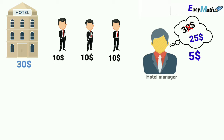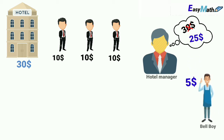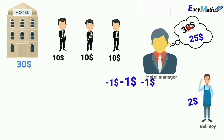So the front desk tells the bellboy to give $5 back to them. But while the bellboy is returning the money, he decides the $5 cannot be divided evenly between these friends. So he decides to keep $2 for himself as a tip and to give $1 to each of these three friends.